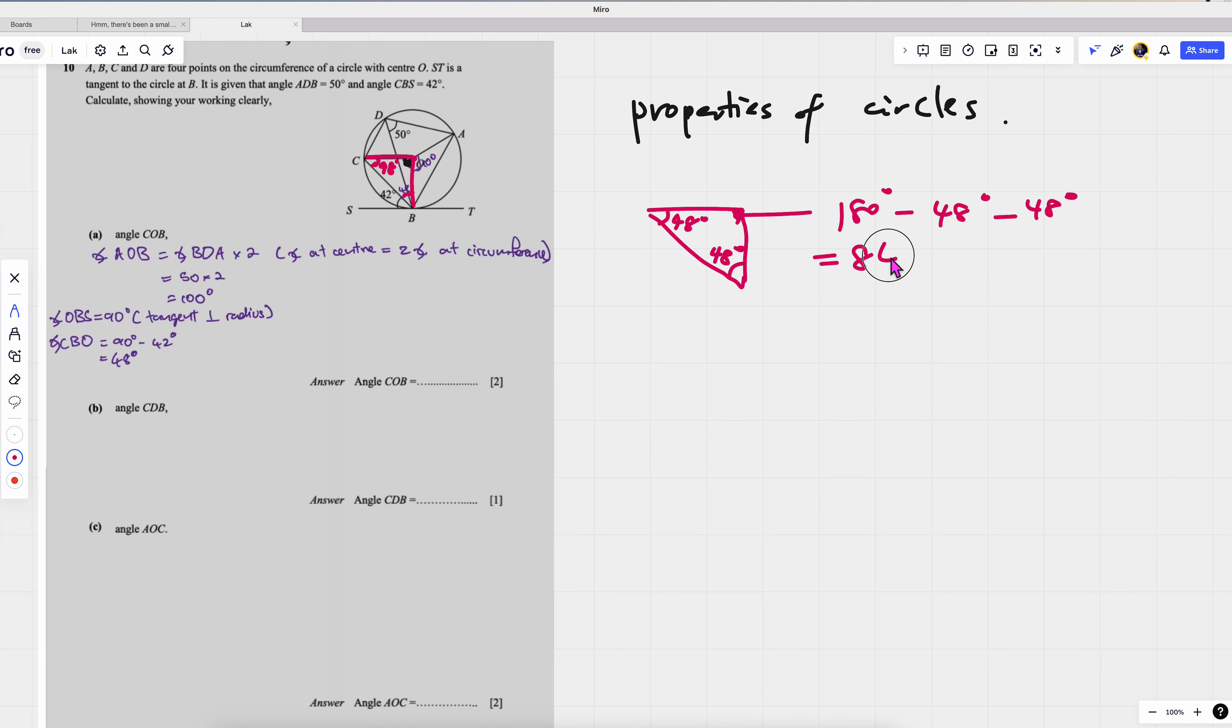So this is 84. And then what about CBD, which is CDB, which is this one, right? So if you look closely, oh yeah, this is the angle at circumference.